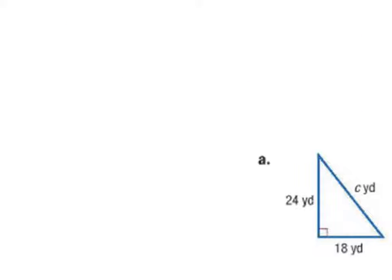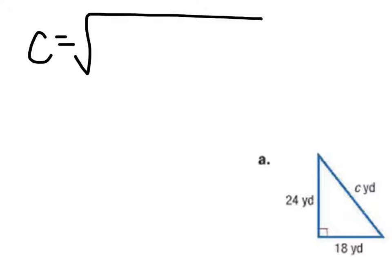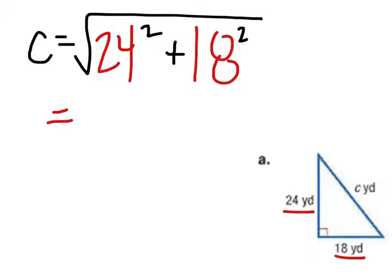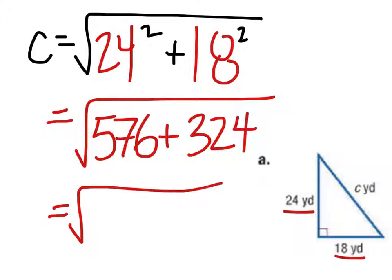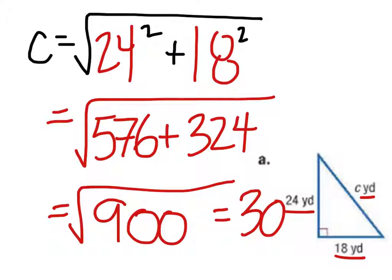In this example, we're finding the hypotenuse. So we take the square root and add the two numbers: 24 squared plus 18 squared. Working it out: 24 squared is 576, plus 18 squared which is 324. Adding those gives the square root of 900, which equals 30. Since it's labeled, the answer is 30 yards.